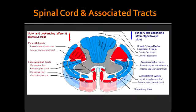You also see the anterior spinothalamic tract, which is responsible for crude touch and pressure. The lateral corticospinal tract is for voluntary motor movements for the legs and arms. You also see the anterior horn and the posterior horn along with the intermediate horn.